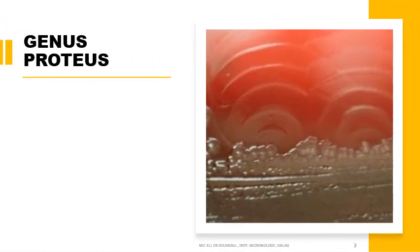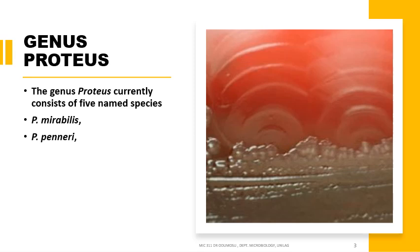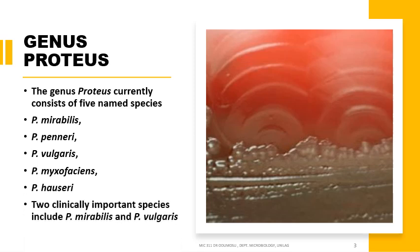The genus consists of different species, out of which five members have been named: Proteus mirabilis, Proteus penneri, Proteus vulgaris, Proteus myxofaciens, and Proteus hauseri. Out of these, two clinically important ones include Proteus mirabilis and Proteus vulgaris. These are the two clinically important species that have been implicated in several diseases and infections.